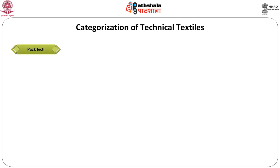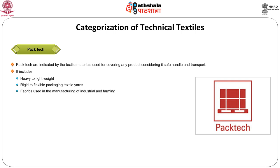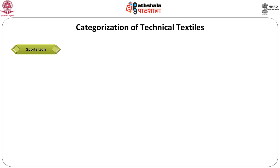Now we are shifting to the next category — pack tech. This includes textile material used for covering any product considering its safe handling and transport. This also helps in increasing the shelf life of the product. Pack tech includes heavy to lightweight, rigid to flexible packing textile yarns and fabrics used in the manufacturing of industrial, farming and consumer goods. This is symbolically indicated by a carton box. You can see pictures of wrapping cloth and jute bags as examples.